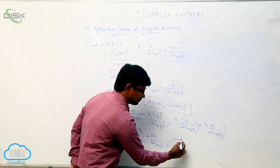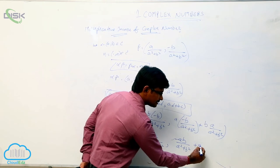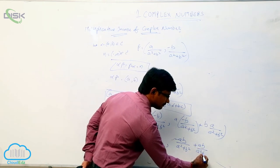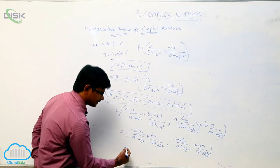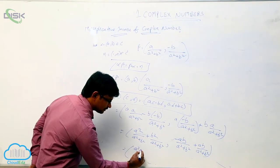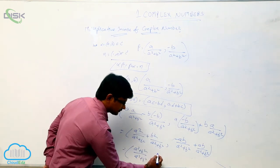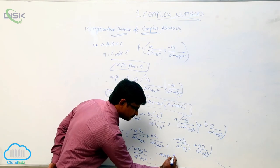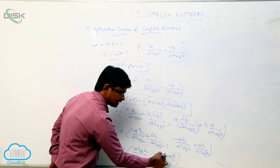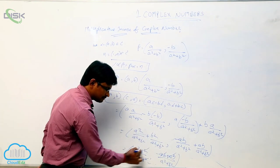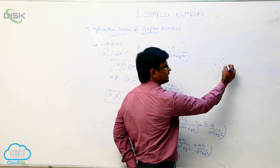Taking the LCM as (a² + b²): the first component becomes (a² + b²) / (a² + b²), and the second component gives (-ab + ab) / (a² + b²). Clearly, -ab + ab cancels, and (a² + b²) / (a² + b²) also cancels. So we get the value (1, 0).